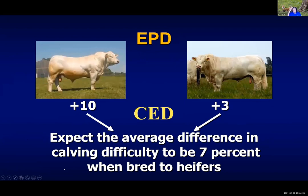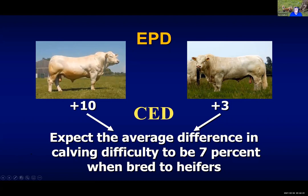When we look at how to use EPDs — the calving ease direct EPDs — here's a couple of Charolais bulls. The bull on the left has a 10 calving ease direct EPD, and the bull on the right has a plus 3 calving ease direct EPD. What this means is, if we were to breed these two bulls to an equal group of heifers and looked at the calving difficulty in those heifers, we would expect there to be a 7% difference, with the bull on the left reducing calving difficulty by about 7%.